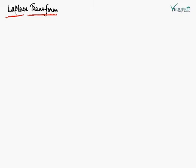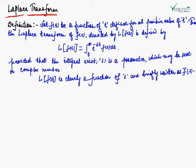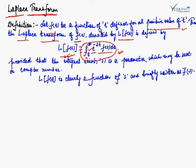We define the Laplace transform as follows: if F(t) is a function of t defined for all positive values of t, then the Laplace transform of F(t), denoted by L[F(t)], is defined by the formula: L[F(t)] = integral from 0 to infinity of e^(-st) F(t) dt, provided this integral exists. Here, S is a parameter which may be a real or complex number. The Laplace transform L[F(t)] is a function of S.